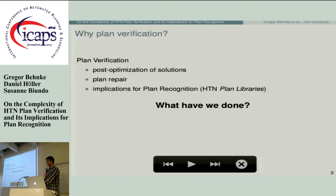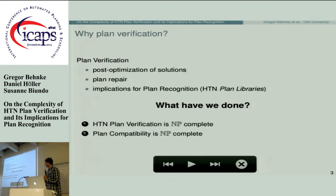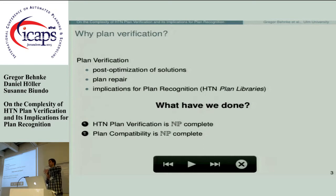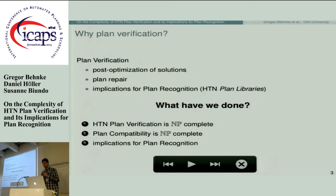In our paper, we first showed that plan verification in two variants is NP-complete. We also discussed the problem of plan compatibility — which asks, given two plans, whether one is a specialization of the other in an ordinary partially ordered semantics, with no HTN involved. And the third contribution is to discuss implications for plan recognition.